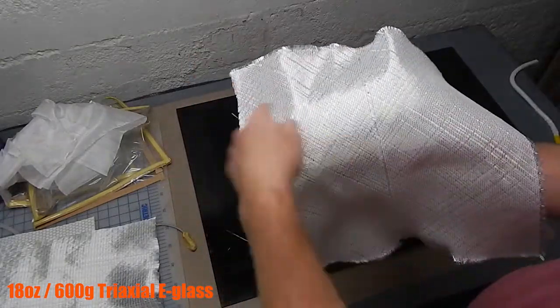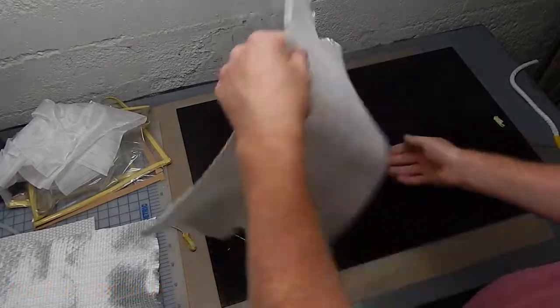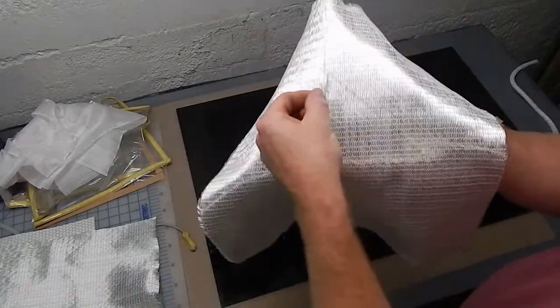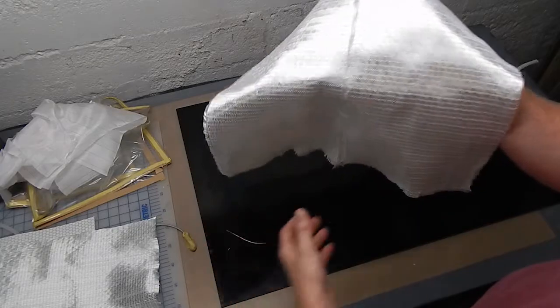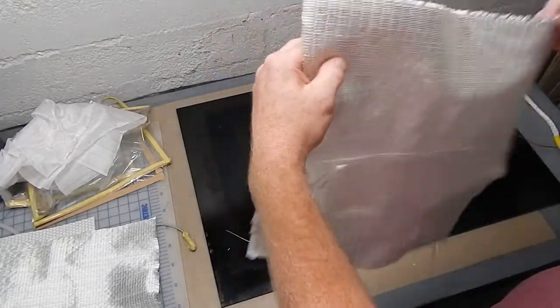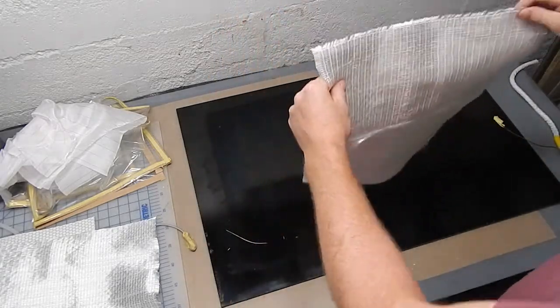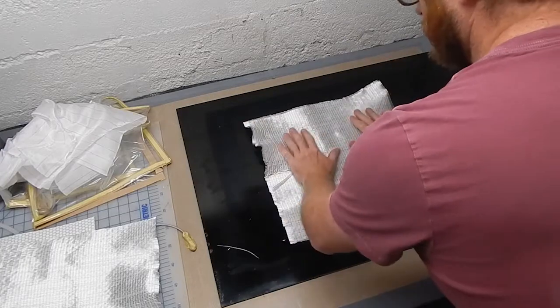This is the triaxial material I'm going to use to lay it up with, the plus or minus 45 on one side and what we'll call zero uni stitched to the other. I'm going to put it with the plus or minus 45 side down. Those fiber bundles are a little smaller.